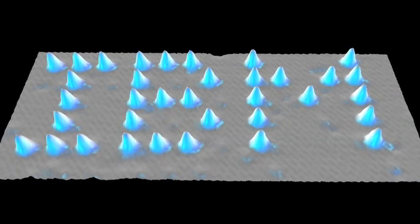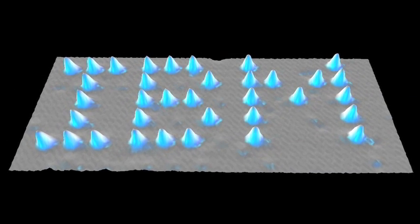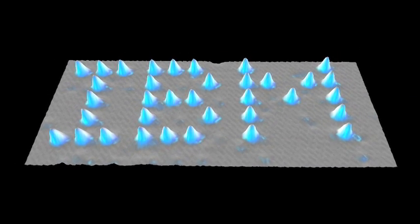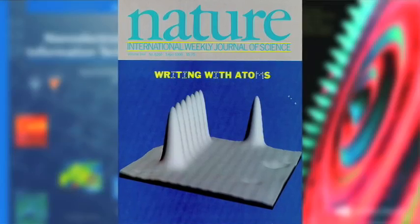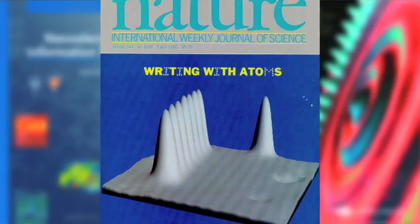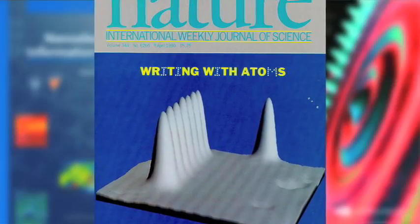To demonstrate this ability, he created the world's tiniest IBM logo, made from 35 xenon atoms. Dr. Eichler's accomplishment remains, to this day, one of the most important breakthroughs in nanotechnology.